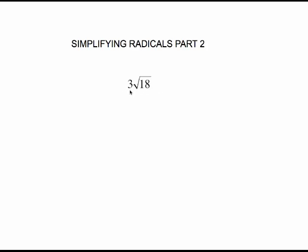My suggestion is: as soon as you see you have a coefficient, bring that coefficient down and put parentheses there to remind you that whatever happens with this square root of 18, you're going to multiply three times that answer. That's the whole deal on having a coefficient — just remember to deal with it.